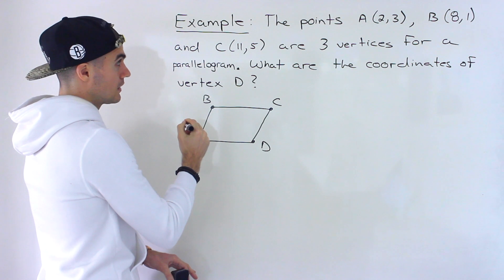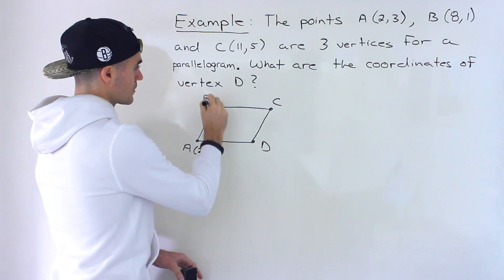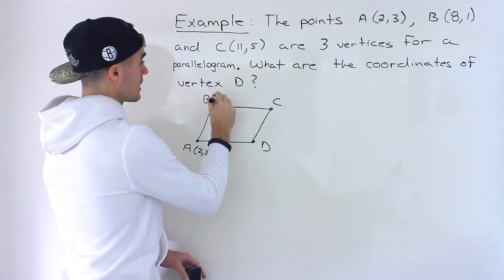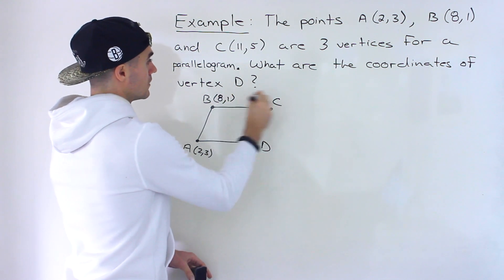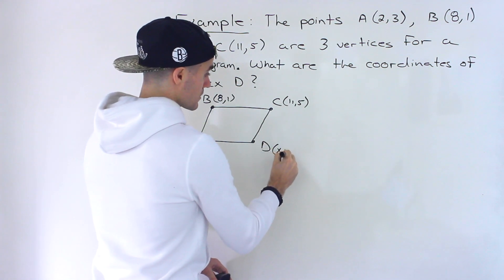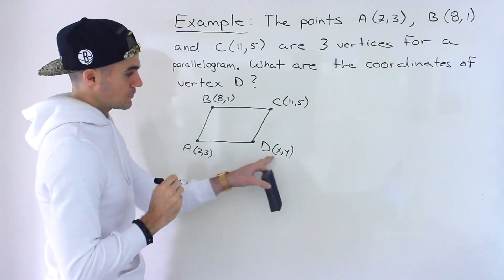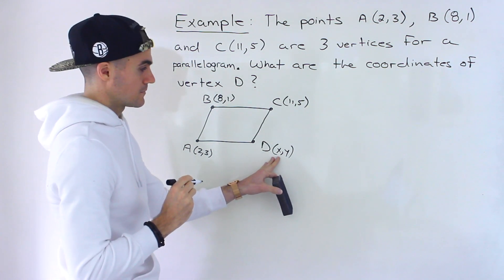So from here, let's actually label these coordinates. We've got 2, 3, we got 8 and 1, we have 11 and 5. And then vertex D, we're actually solving for that. So that's going to be X and Y. The question is, how do we solve for this vertex here?